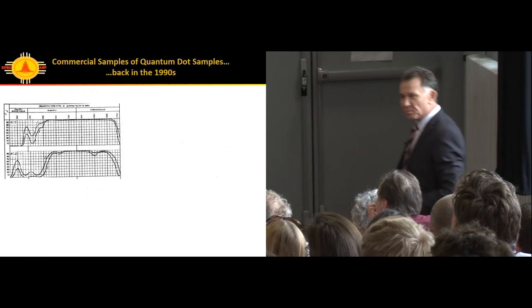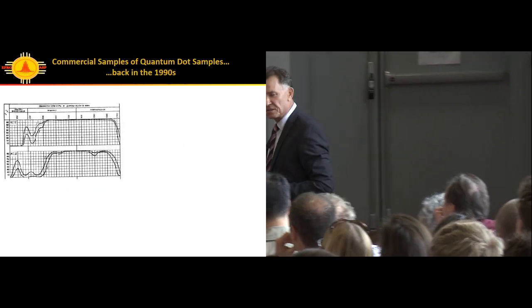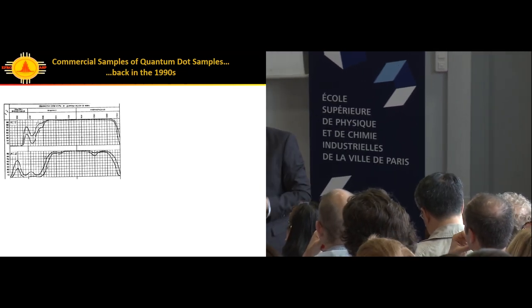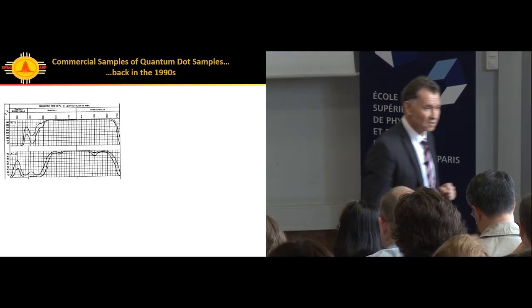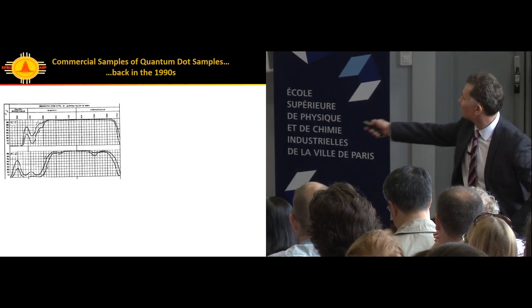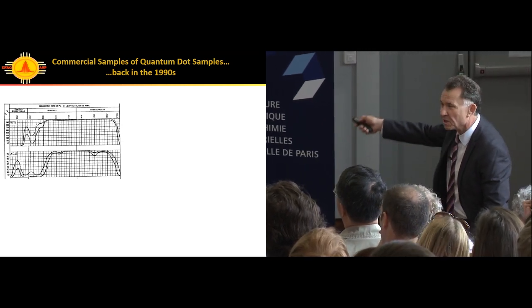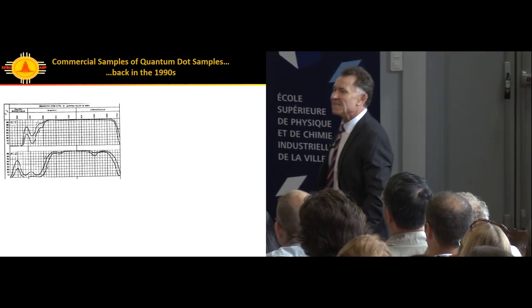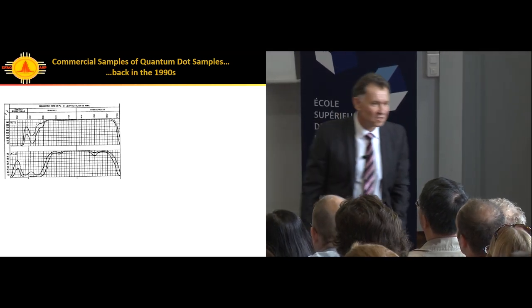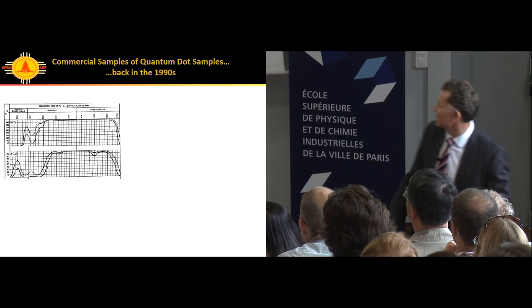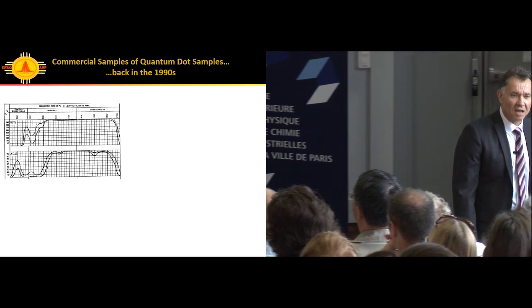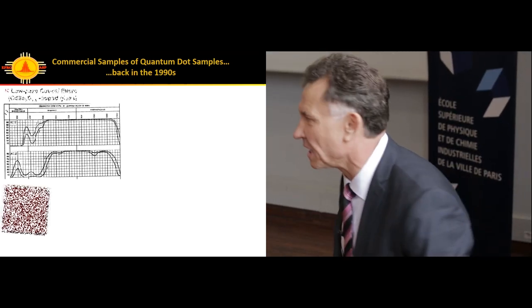Commercial samples. Somebody knows these days you can get samples from Evident, maybe NN Labs. At that time, we could also get commercial samples. People proficient in Russian language might realize what these samples are - transmission spectra of commercial cut-off filters. KC15, red glass number 15. At that time, we learned the secret.